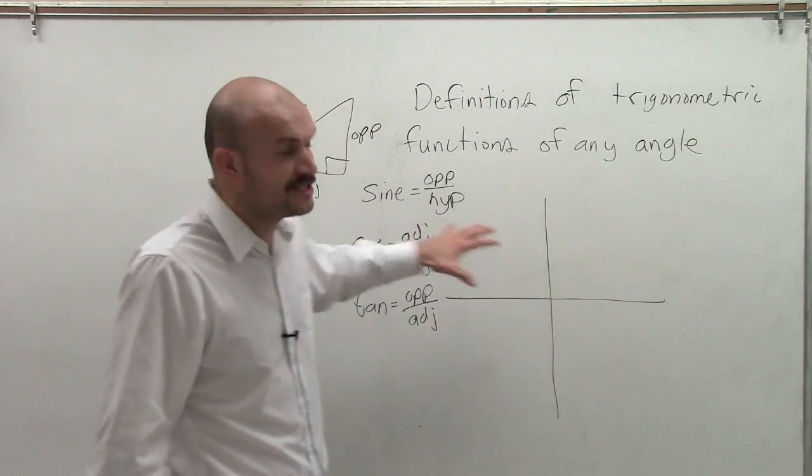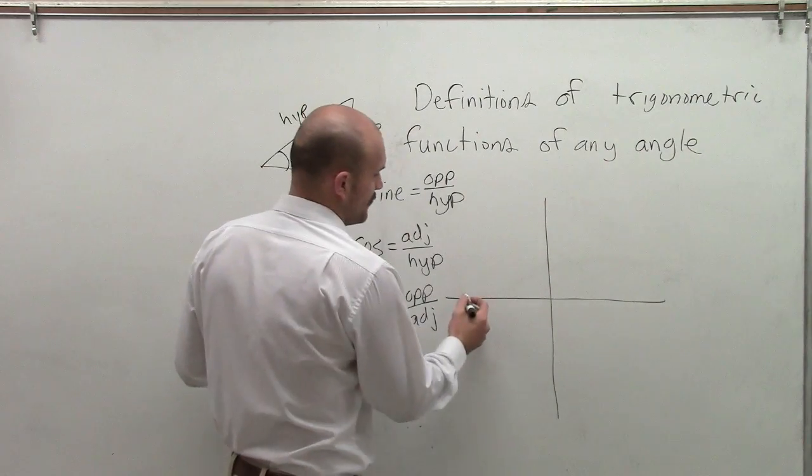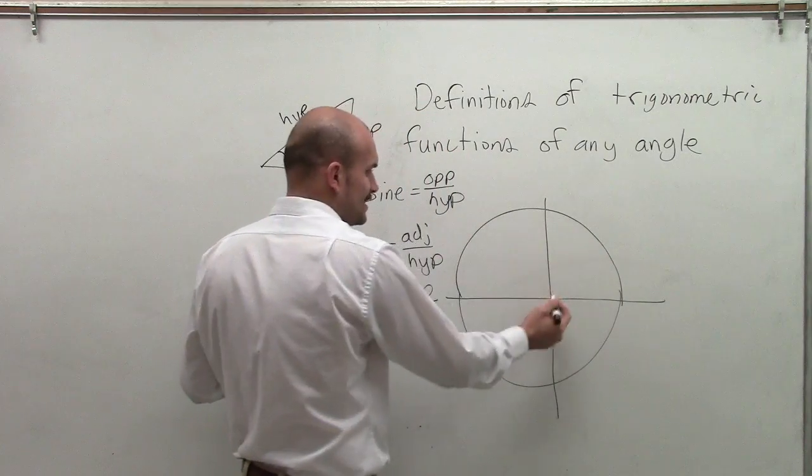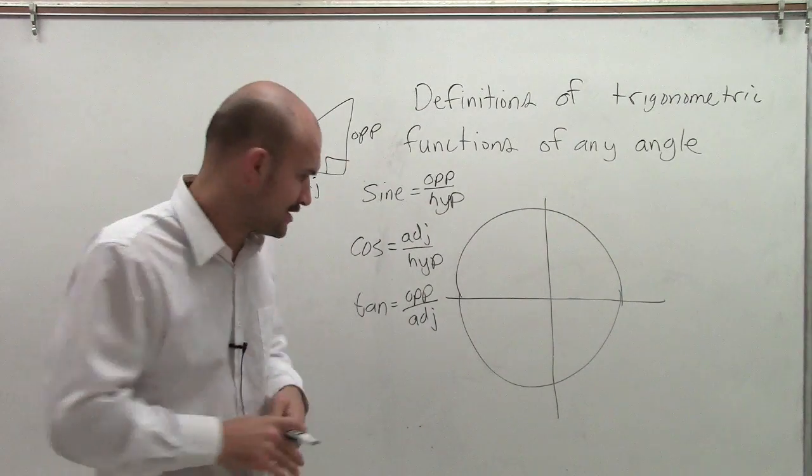However, now we're going to be dealing with any point or any angle. Before, we said the unit circle had 30 degrees, 90 degrees - those are all special angles that we could easily evaluate the trigonometric function.